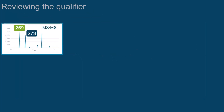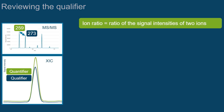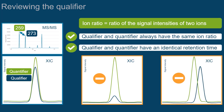When reviewing the qualifier, it is important to know that the relative signal intensity of a qualifier and quantifier is always the same as long as the same fragmentation energy is applied. This relative signal intensity is usually expressed as ion ratio, which is the ratio of the signal intensities of the two ions. You can only rely on a quantitation based on a quantifier signal if the corresponding qualifier indicates the same ion ratio as expected and has an identical retention time.